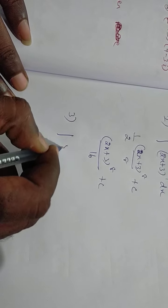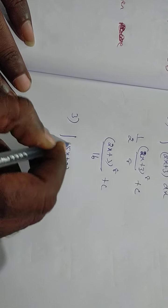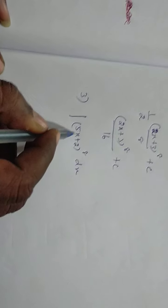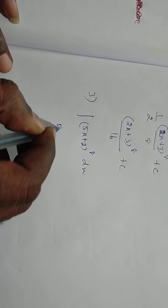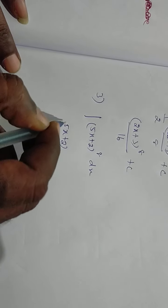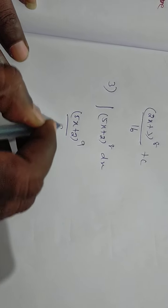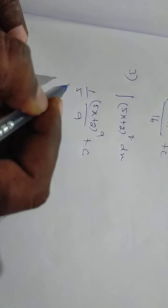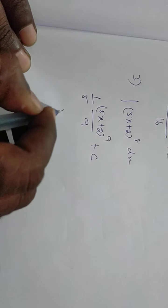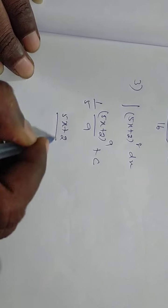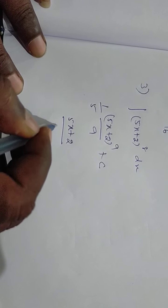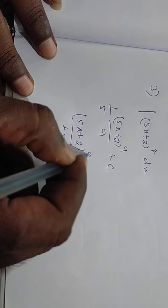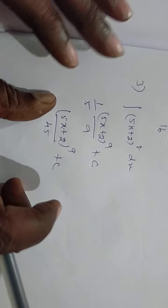Another example: integration of (5x plus 2) the whole power 8 dx. As usual, integration gives (5x plus 2) whole power 9 by 9 plus c. The coefficient of x is 5, so we multiply by 1 by 5. The answer is (5x plus 2) whole power 9 by 45 plus c. This is the main concept.